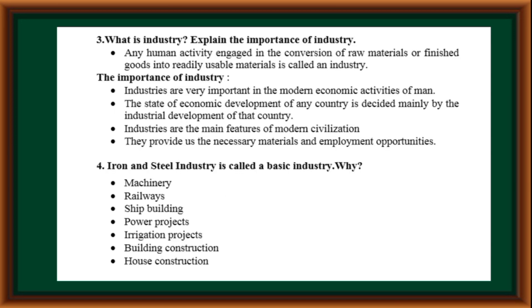What is an industry? Explain the importance of industry. Any human activity engaged in the conversion of raw materials into finished goods or readily usable material is called an industry. Industries are very important in the modern economic activities of man. The state of economic development of any country is decided mainly by the industrial development of that country. Industries are the main features of modern civilization — they provide us necessary materials and employment opportunities.